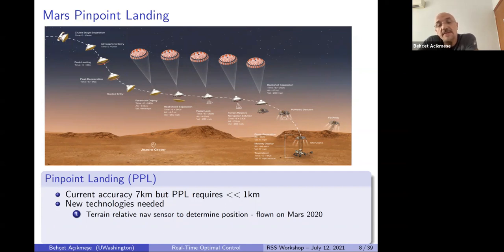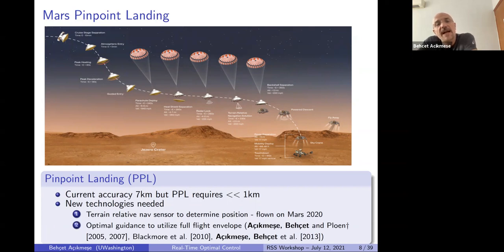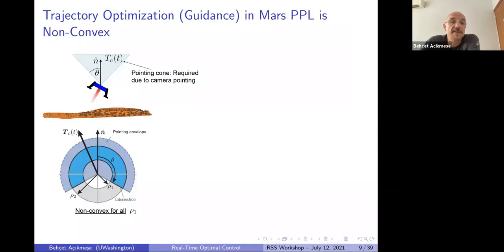Till now, we have not performed what is called pinpoint landing, meaning that given a target, we didn't ensure landings within maybe a couple of hundred meters or a kilometer of that target. Our accuracy started in tens of kilometers, dropped down to about 10 kilometers, I think, in MSL. Now it's down to four kilometers or so, radius, I believe. So we are not still in the pinpoint landing domain. To perform pinpoint landing, which is typically defined as less than kilometer, you need several technologies. One is terrain-related navigation sensor to determine your horizontal position, not only vertical, but horizontal. And actually, it's flown on Mars 2020 mission, which landed in 2021, recently, Perseverance mission. This sensor has been flown.